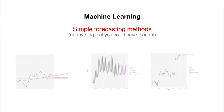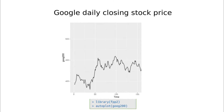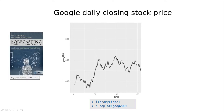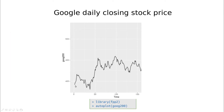Hi everyone! Let's start exploring some very simple methods. Imagine that you have the Google Daily Closing Prices and you can use this dataset from the FPP2 library, which is the companion library for the excellent book mentioned in the previous video. Imagine that you have this in dollars and you want to make some predictions about what is going to happen after this day.